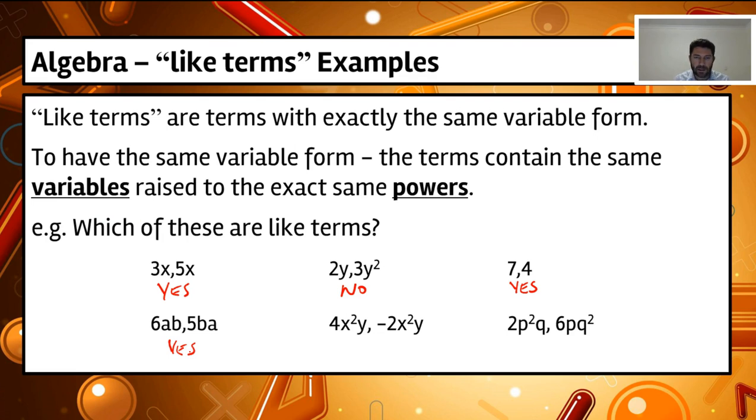Now, 4x squared y, and we've got minus 2x squared y. So let's have a look, we've got x raised to the power of 2 on one side, and we've got x raised to the power of 2 here. So that's the same, and we've got y and a y. So these ones are like terms.